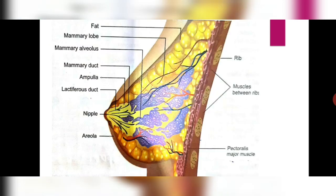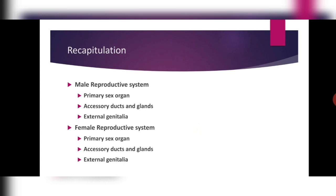So this is all about the female reproductive system. Let us recapitulate what we have learnt today. We discussed the male reproductive system: primary sex organ — testis; accessory ducts — rete testis, vasa efferentia, epididymis and vas deferens; glands — prostate gland, seminal vesicle and bulbourethral gland; external genitalia — penis. For the female reproductive system: primary sex organ — a pair of ovaries; accessory ducts — fallopian tube, cervix, vagina and uterus; accessory glands — mammary glands; and external genitalia — the vulva.